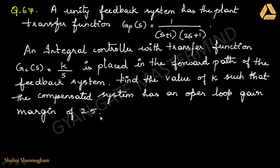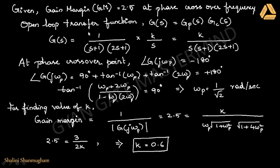They have given the transfer function Gp(s), and they have also added another block K/s in front of Gp(s). So the open loop transfer function is given by G(s) = Gc(s) · Gp(s), which equals K divided by s(s+1)(2s+1).